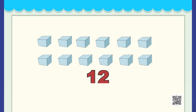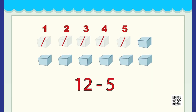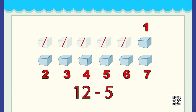Let's solve another part. Here we have 12 blocks, from which we have removed 5 blocks. So 12 minus 5 — let's see how many are left. 1, 2, 3, 4, 5, 6 and 7. So 12 minus 5 we are left with 7 blocks. We hope you are enjoying counting and subtraction of blocks with us.